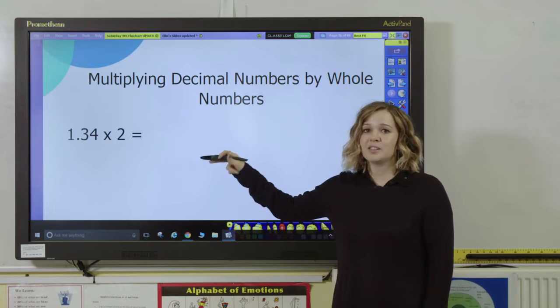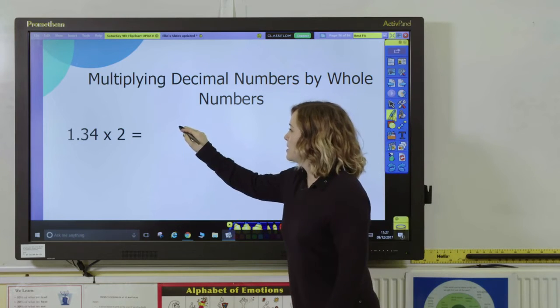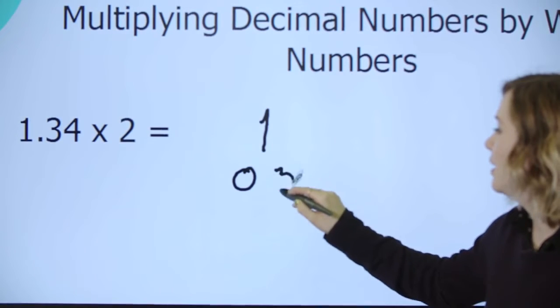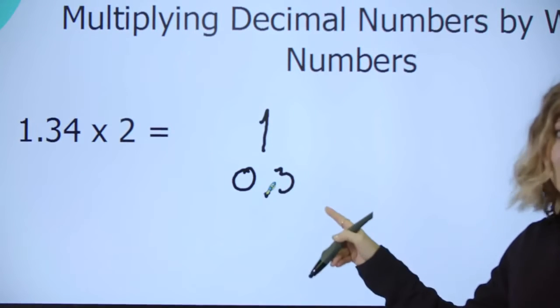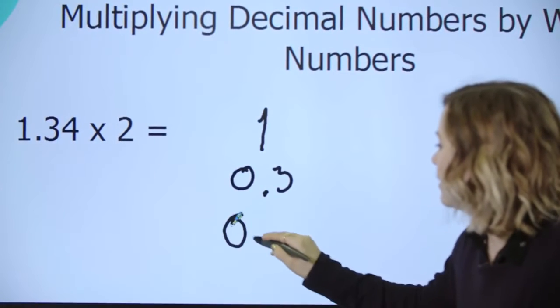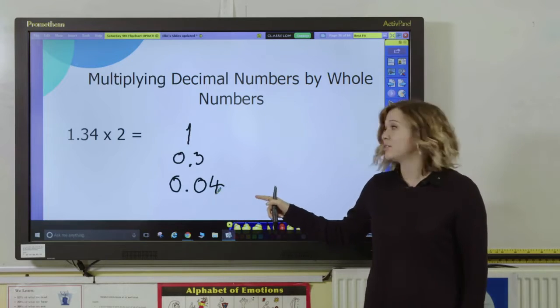I'm going to partition my number to demonstrate this, so I've got 1.34 which I'm going to split up into 1, 0.3—ask your pupils the value of that number, they should be able to tell you it's 3 tenths—and 0.04. Again, they should be able to tell you that's four hundredths.